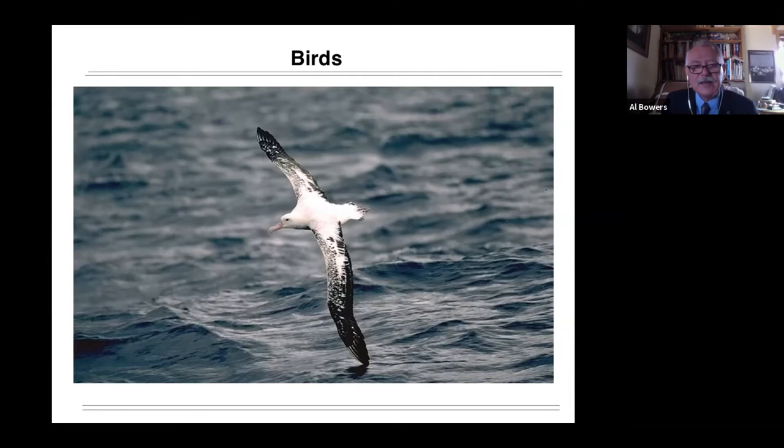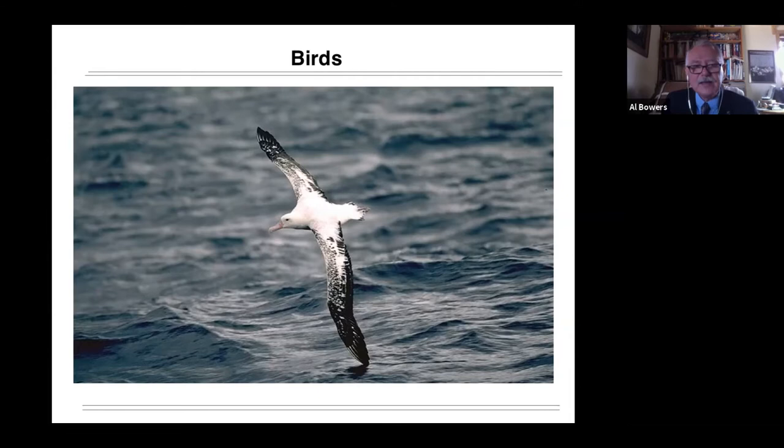Wilbur and Orville flew that glider hundreds of times and crashed it hundreds of times. Because every time they would try and turn the aircraft, they would create more lift on one wing. But as they created more lift, it would create more drag. And the nose of the aircraft would yaw the wrong direction instead of lifting that wing and turning in the correct direction. And they crashed hundreds of times.